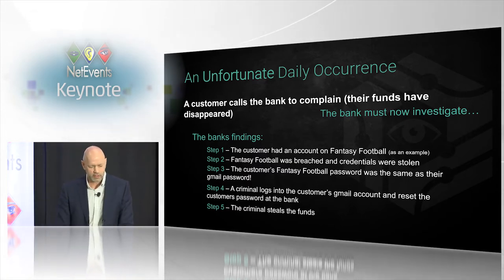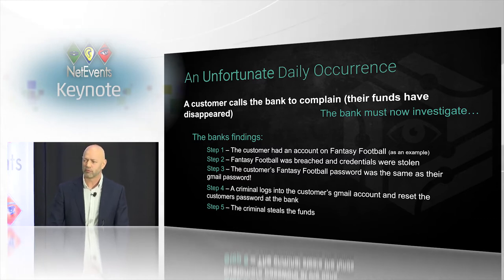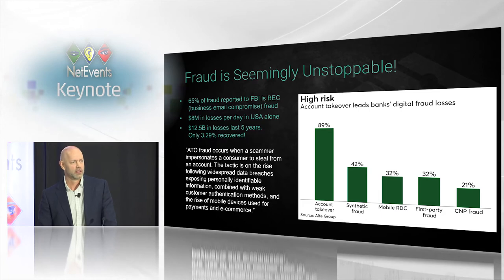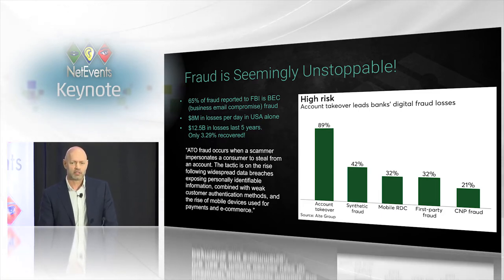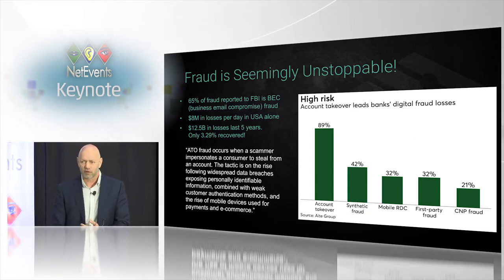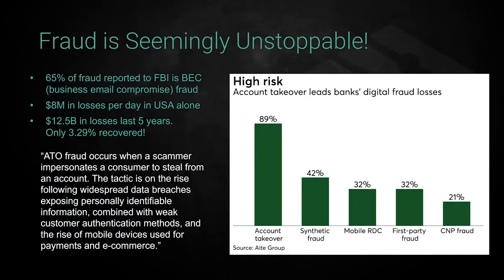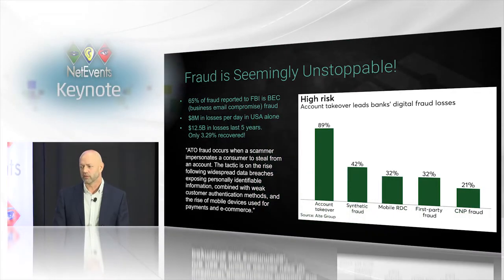We talked yesterday as well about BEC fraud — business email compromise fraud. This is the number one form of fraud, period. 65% of all fraud being reported to the FBI is BEC fraud. This covers CEO fraud, account takeovers where somebody accesses your inbox and sends emails on your behalf, and things like romance schemes. This number came from the FBI two years ago, so it's a bit old — I'm sure the number lost is higher. But the scary part is the amount of money that has been recovered is only 3%. That tells a grim picture of the reality that we live in right now.